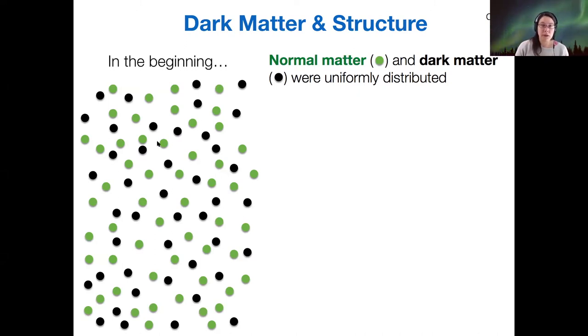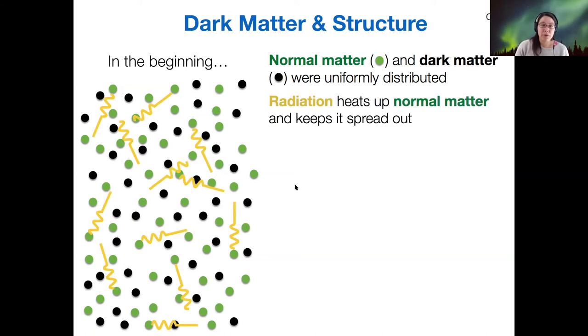So in this situation, at first we don't have any light, but eventually we do have light and that radiation heats up the normal matter. So all the green particles and keeps those particles spread out from each other.